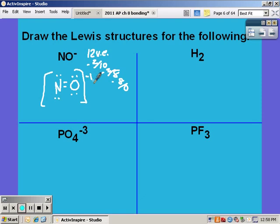Go ahead and solve the Lewis structure for hydrogen and phosphate ion. You should have gotten two valence electrons for hydrogen. Attaching them and you're done.